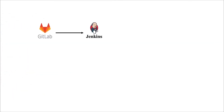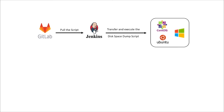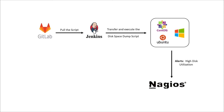Let's explore the workflow of automated resolution for high disk usage on operating system using Nagios and Rundeck, stage by stage. In the first stage, the Jenkins job will pull the script from GitLab. In the next stage, Jenkins will transfer and execute the script on all three nodes, which increases disk usage on the machines.